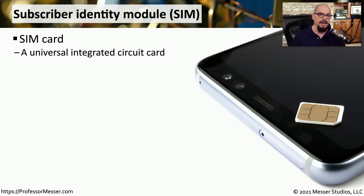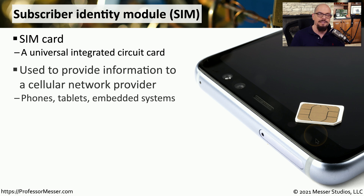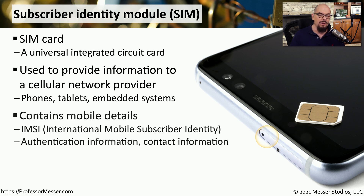To connect over one of these cellular networks, you need to have a subscriber identity module, or what we commonly call a SIM card. This is a universal standard for an integrated circuit card, common in our mobile phones. IoT devices using 5G networks will also need a SIM card, as it provides the important connection between the IoT device and the cellular network. These SIM cards will often contain an IMSI — an International Mobile Subscriber Identity value.